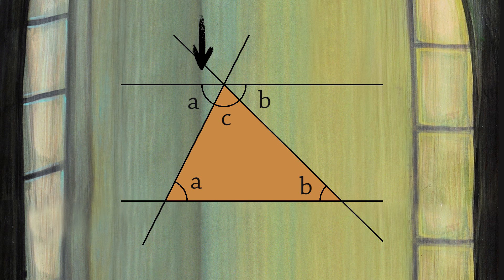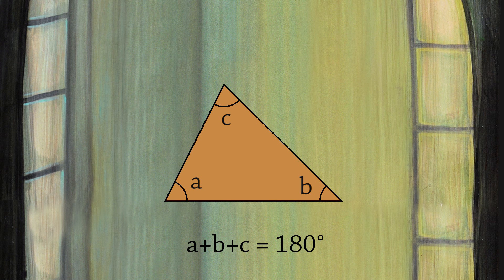The angles A, B, and C form a straight angle, so A plus B plus C equals 180 degrees. This proves that the sum of the angles of the triangle is 180 degrees.